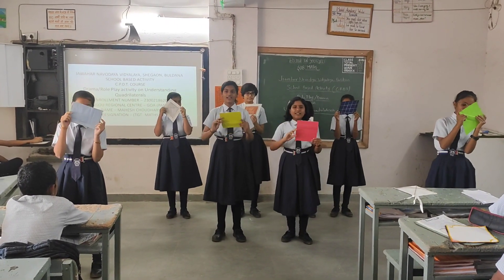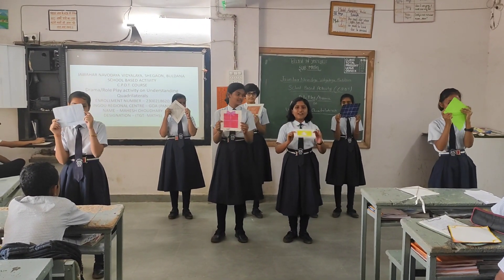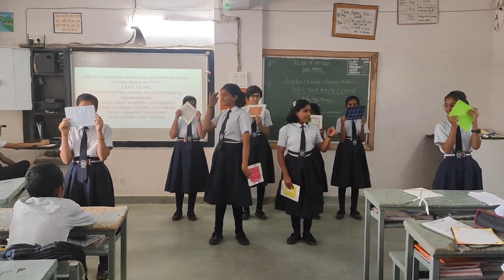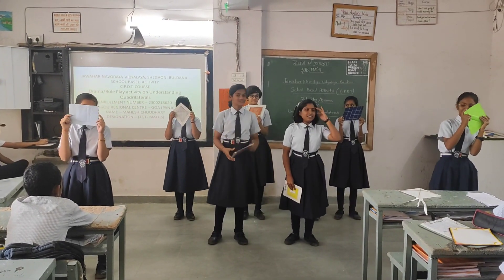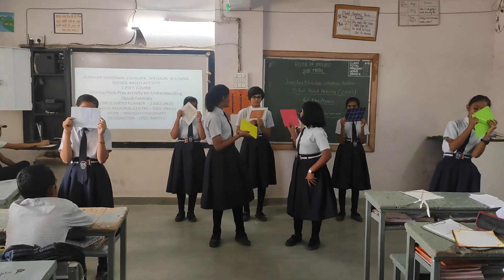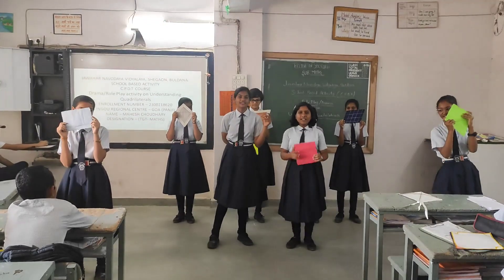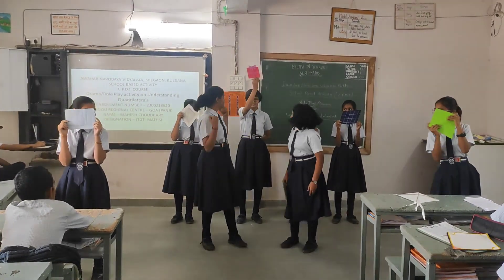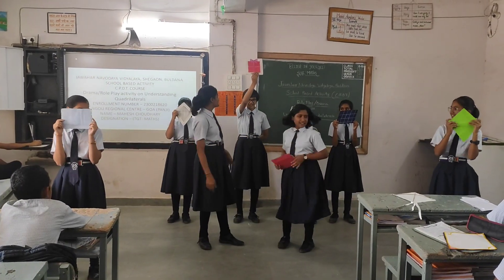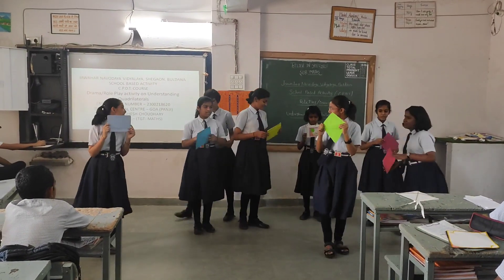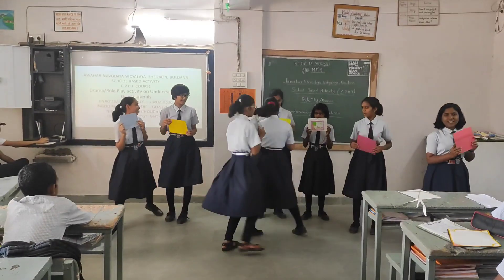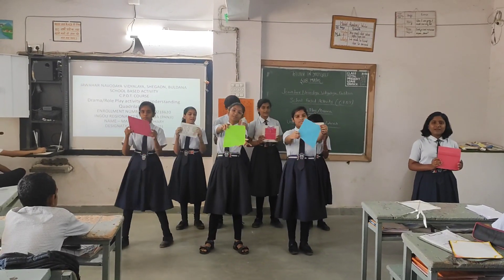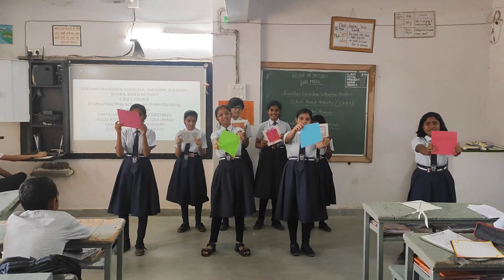Every side is the same and every angle is right. Like a box, or a table, or a seat, or a wheelchair. But where is it hiding? Can you spot the square? Where is the square? Great! Shapes, shapes, shapes are everywhere. Kites and parallelograms.